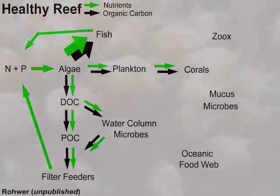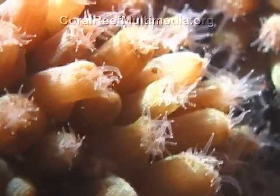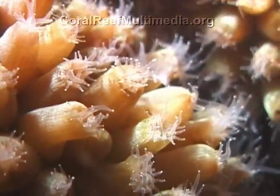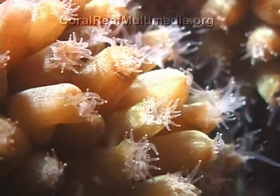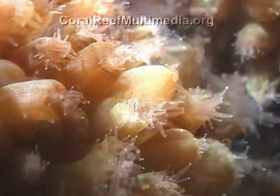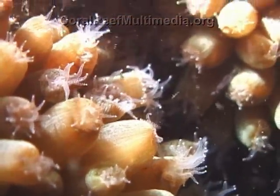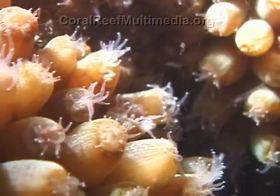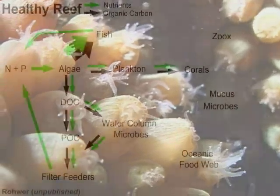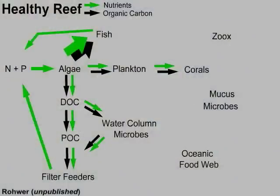By extending their tentacles, corals are able to trap plankton in the water column. These trapped particles are then transported to the mouth by the cilia at the coral tissue surface. The zooxanthellae, residing within the coral tissues, use nutrients made available by the coral as a byproduct of their metabolism. In return, the coral gains energy-rich organic carbon as the zooxanthellae metabolize.